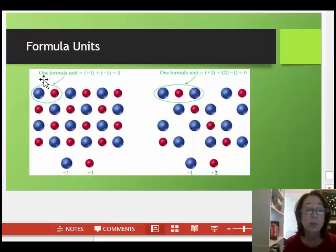A formula unit has one cation and one anion. On the right hand side, a cation has a positive two charge and each anion has a negative one charge. Thus each cation needs two anions. A formula unit is circled and has one cation and two anions. For every cation, there are two anions.